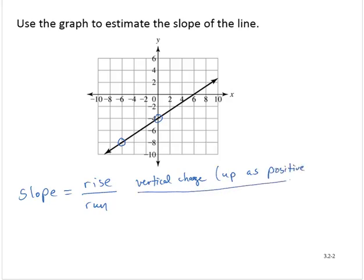The run is the horizontal change, and we think of right as positive.